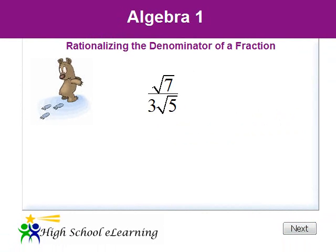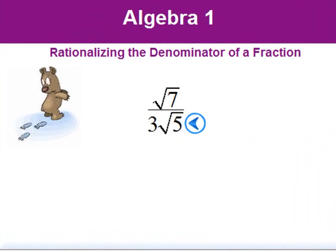Now our denominator is in its simplest form, so we're ready to rationalize the denominator. We'll multiply the numerator and denominator by the radical in the denominator, the square root of five.